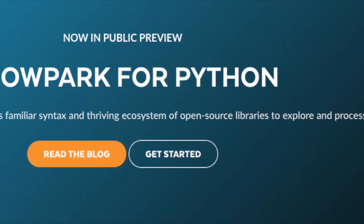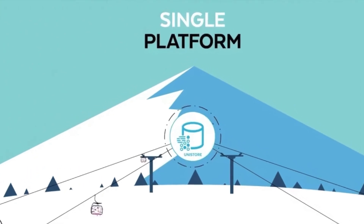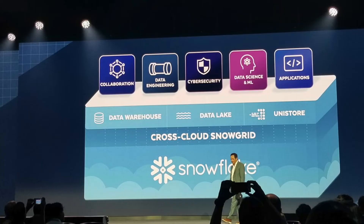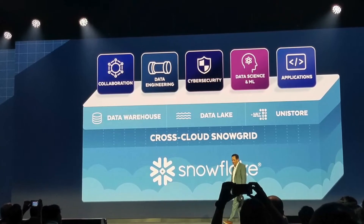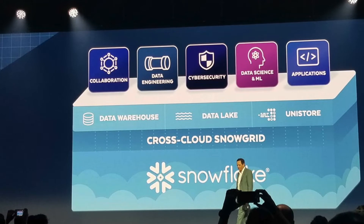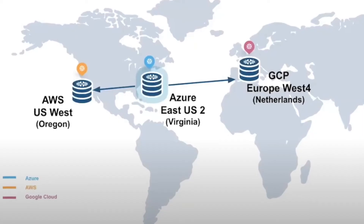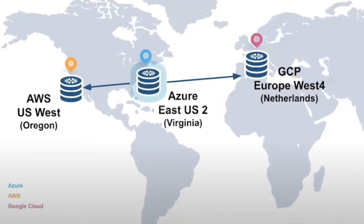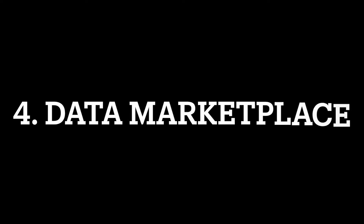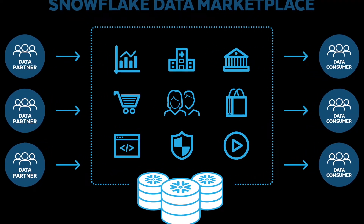Once you've got all that data in one place and you build your applications on top of it, that brings us to the next two pillars. The first is global architecture — using Snowgrid, a unified global platform operating at scale, which allows for cross-cloud and cross-region replication across the three major cloud providers. The next pillar is the data marketplace, which enables you to share data more broadly and easily, deploy applications at scale, and monetize your data and applications.